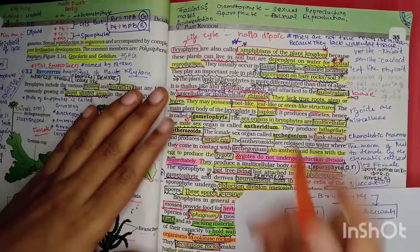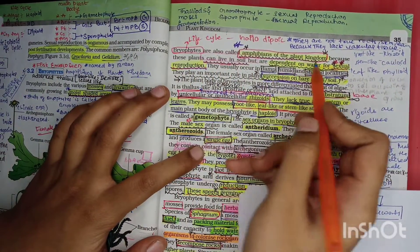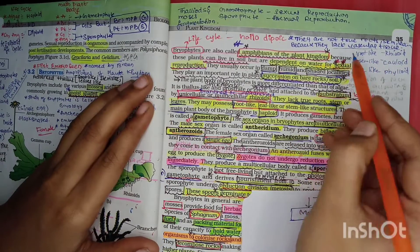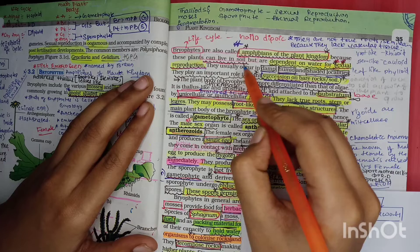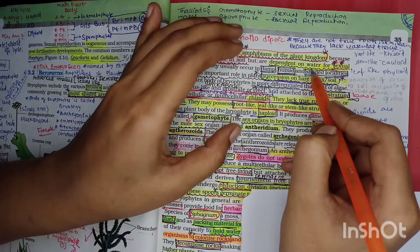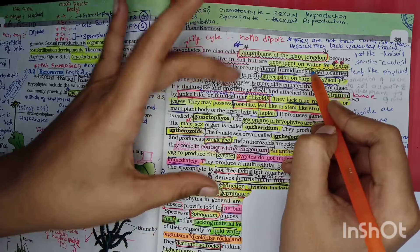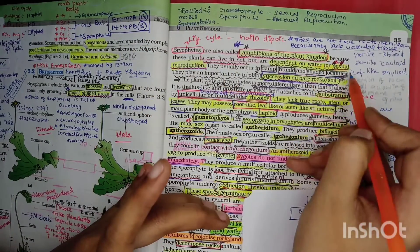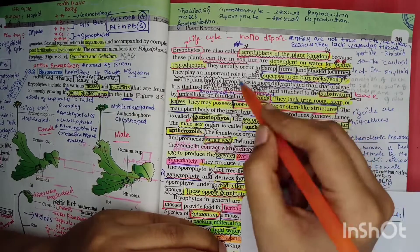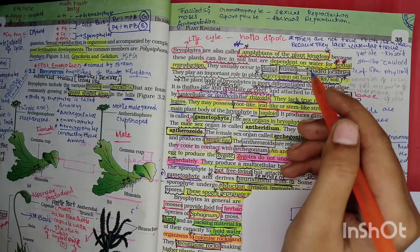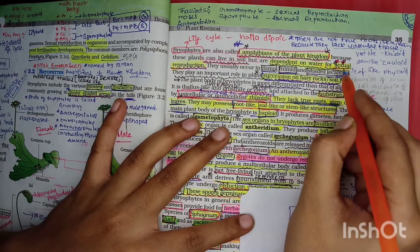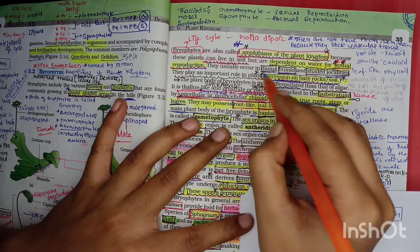Bryophytes are also known as amphibians of the land kingdom because they live both on land and water. These plants can live on land but depend on water for sexual reproduction. Water is very crucial - male gametes need a medium of water to reach the female gametes for sexual reproduction.